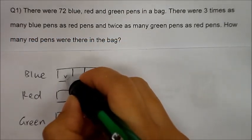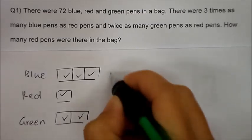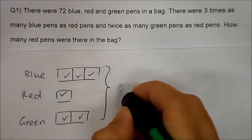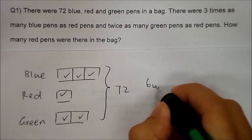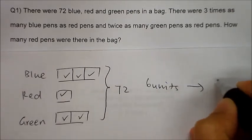So we have a total of one, two, three, four, five, six units. A total of 72 blue, red, and green pens. So six units represents 72.